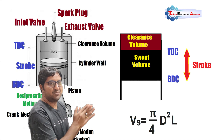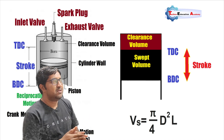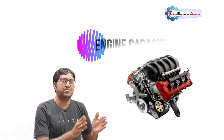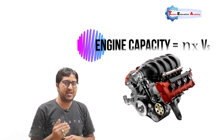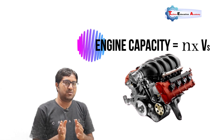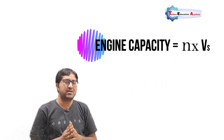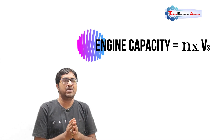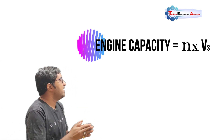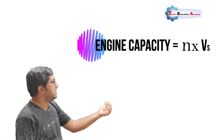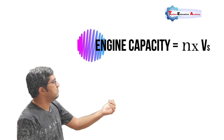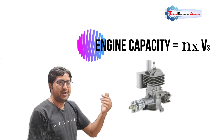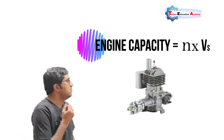Engine capacity is measured in terms of swept volume. For example, if the number of cylinders is four, the total swept volume is n multiplied by Vs, where n is the number of cylinders. So the engine capacity equation is: engine capacity equals n multiplied by Vs. For a six-cylinder engine, n equals 6; for a single-cylinder engine, n equals 1.